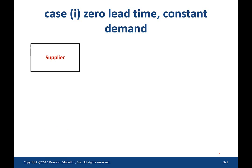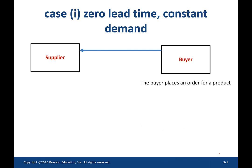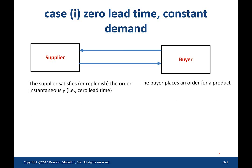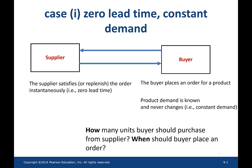So we have two entities. First one is a supplier, second one is a buyer. The buyer places an order for a product and the supplier satisfies the order instantaneously, which is zero lead time. In reality, this would never happen, but this is just an assumption for this particular setup. And the buyer faces a demand which is known and constant.